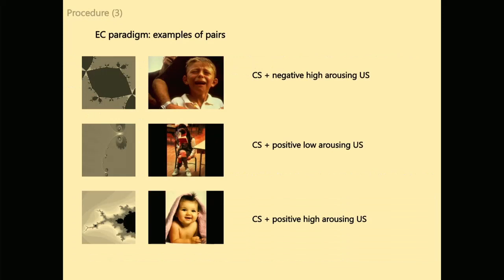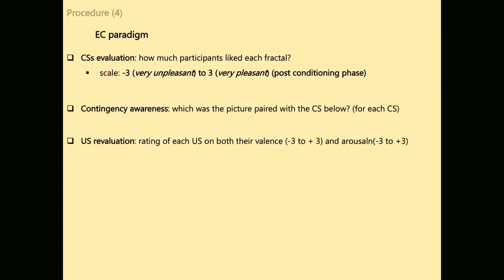One US was positive and high-arousing. Another US was positive and low-arousing. The third US was negative and high-arousing. And the last US was negative and low-arousing. The CS–US pairs were fixed at random, so the pair was always the same and was presented in random order. Each pair was presented eight times for a total of 32 trials. Here is an example of possible pairs. After the conditioning phase, there was CS evaluation, where participants indicated how pleasant or unpleasant the CS was. Then there was the contingency awareness phase and finally the US evaluation phase.